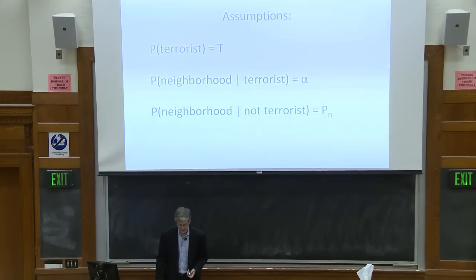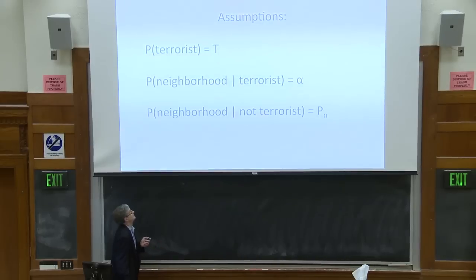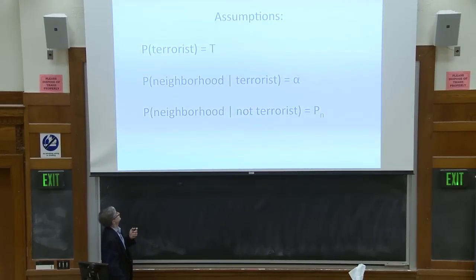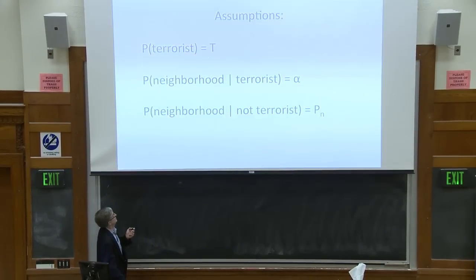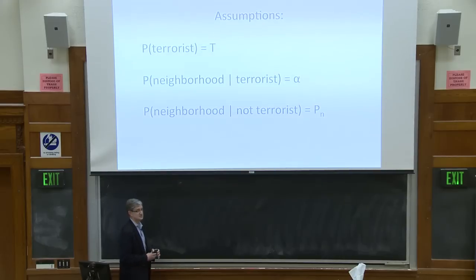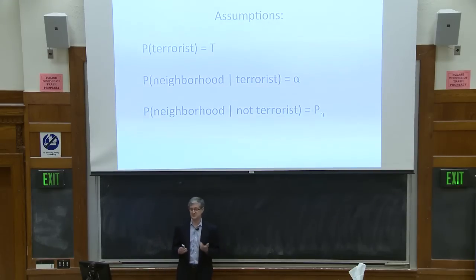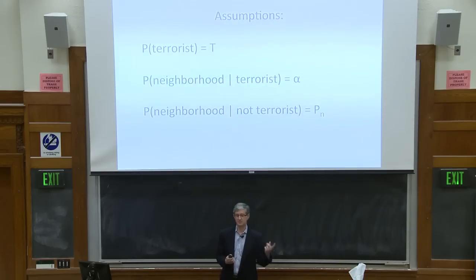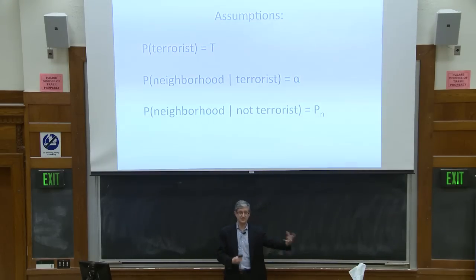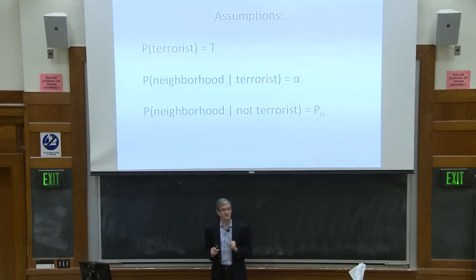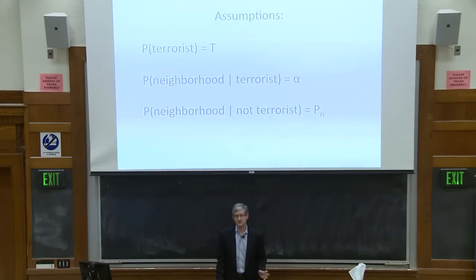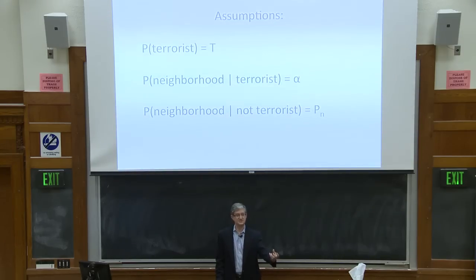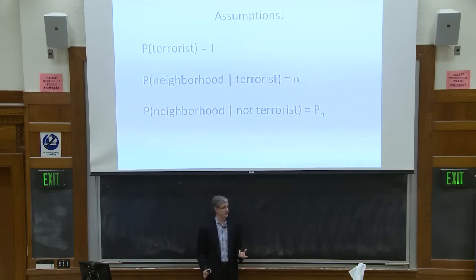We define three parameters. First, T — the prior probability that Bob is a terrorist based on the analyst's evidence before looking at the call graph. Second, alpha — if Bob is a terrorist, the probability that he's in the near neighborhood of known bad guy, reflecting the chance that he and the known bad guy fail to stay out of each other's neighborhood. Third, p_n — if Bob is not a terrorist, the probability that he's in the near neighborhood anyway, essentially the base rate for any two random people being in the same near neighborhood.